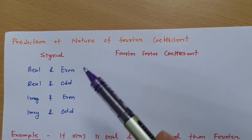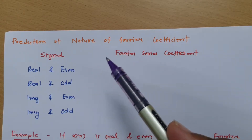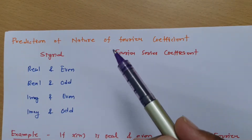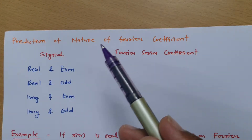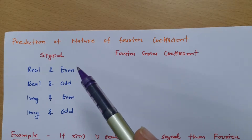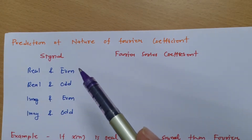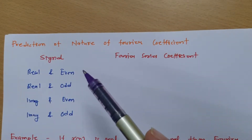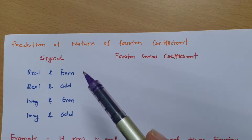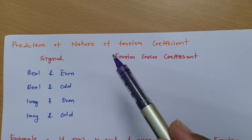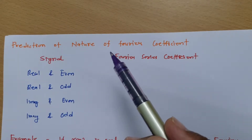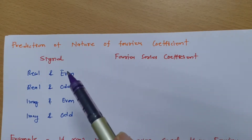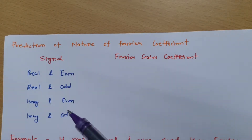Sometimes you will be given a signal and, based on its nature, you need to calculate what the Fourier coefficient will be. We will see how to predict that based on the signal's characteristics.